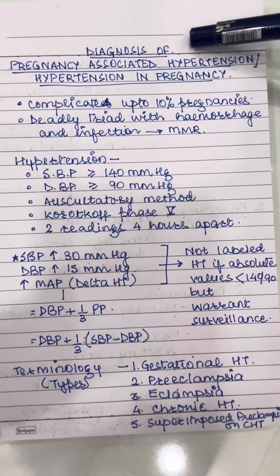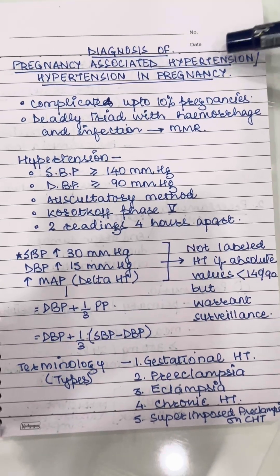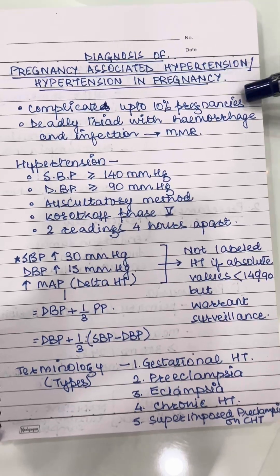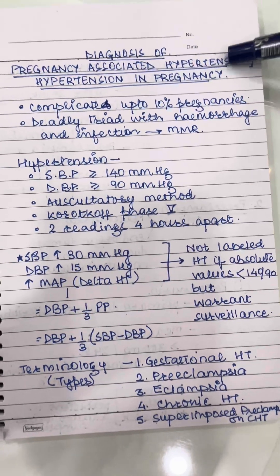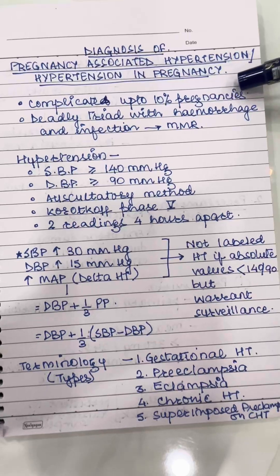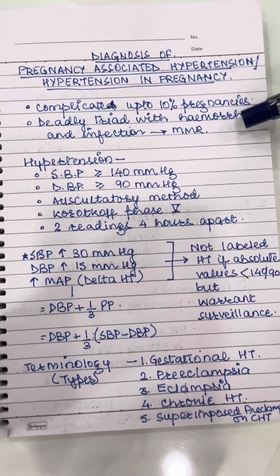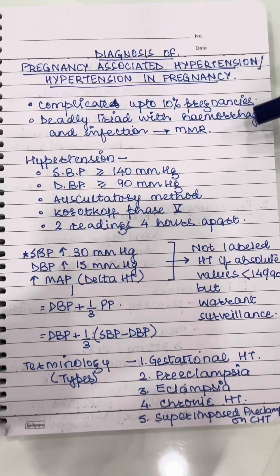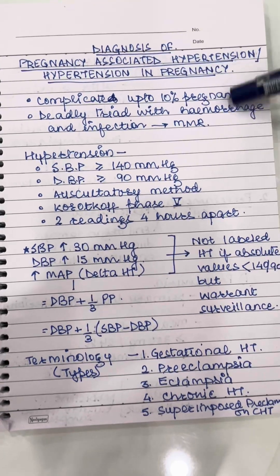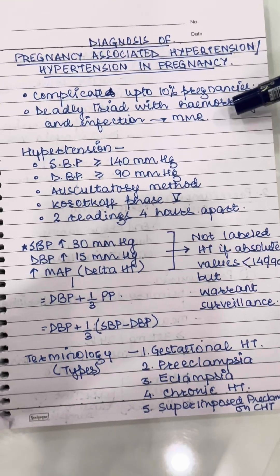Our topic for the day is Diagnosis of Pregnancy Associated Hypertension, or Hypertension in Pregnancy. This is an important topic because it complicates up to 10% of pregnancies and forms a deadly triad with hemorrhage and infection as an important cause of maternal deaths and maternal morbidity.